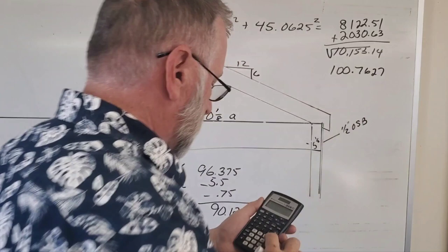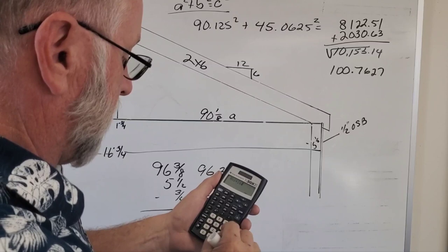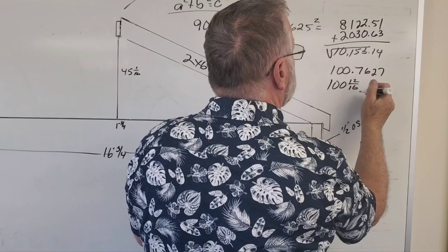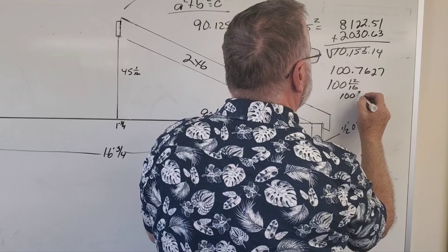Let's get rid of the 100. We have 0.76 times 16, because we really care about sixteenths. Twelve sixteenths, 100 and 12/16, which is 3/4, right? One hundred and three fourths.